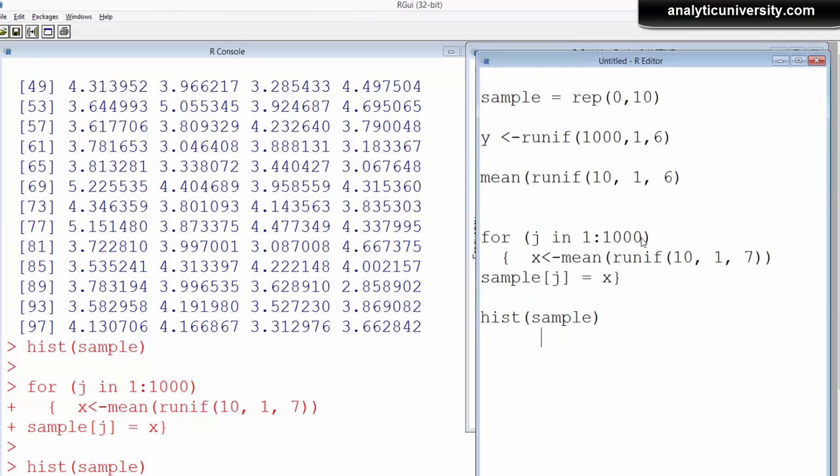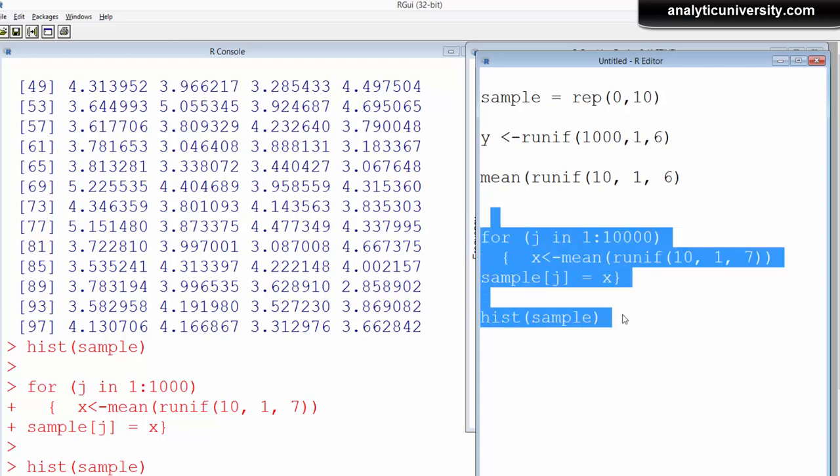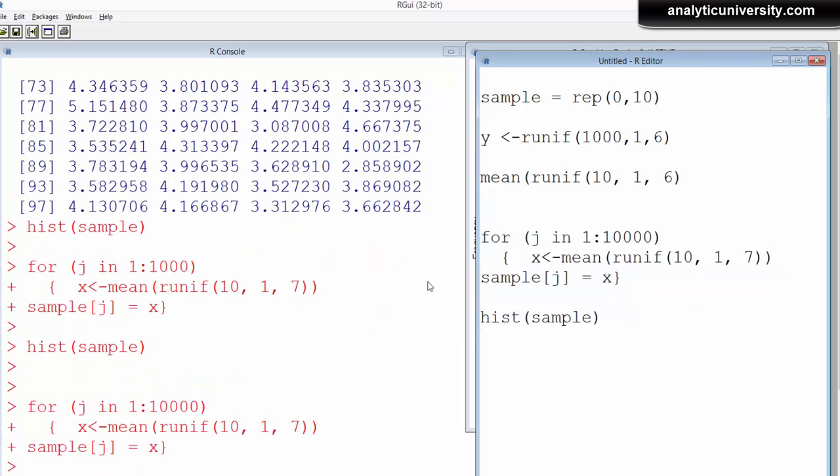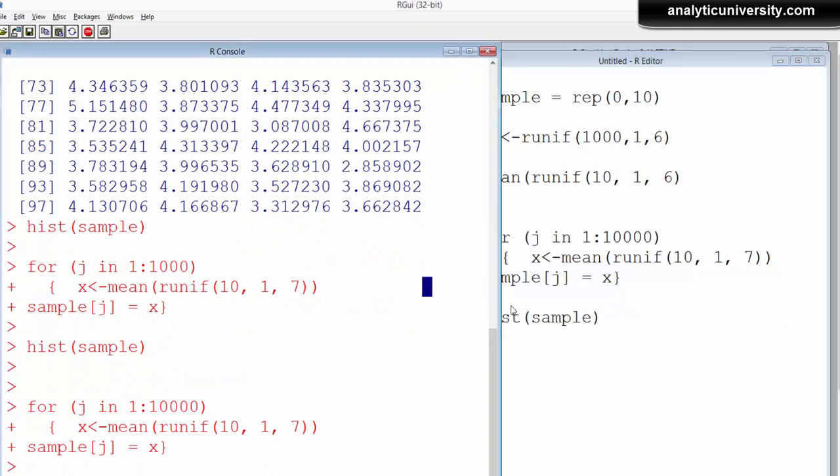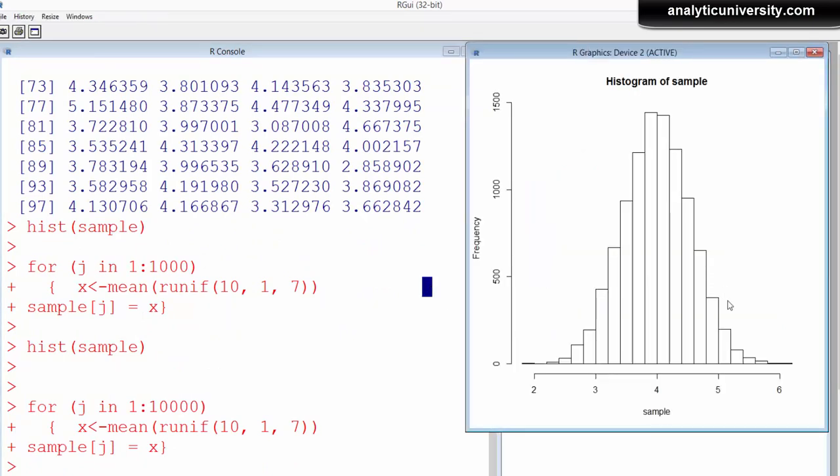Let's do it for 10,000 times. It will take some time, but I'm sure it will look closer to a perfect normal distribution. Yes. Now you can see, this is the average. We have just taken the average for 10,000 trials, and look how the average looks like. It's normally distributed.